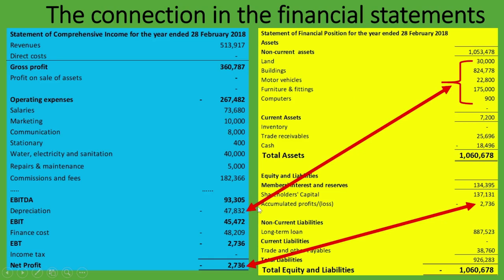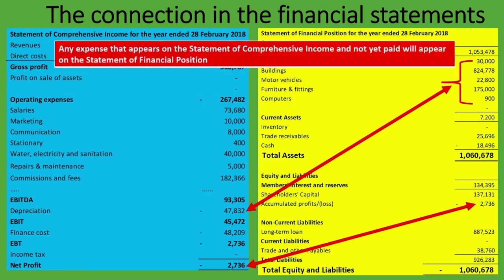Another connection between the income statement and balance sheet is depreciation. Depreciation in the statement of comprehensive income reduces non-current assets such as buildings, motor vehicles, furniture and fittings, and computers in the statement of financial position. The depreciation for the current period is added to accumulated depreciation from prior periods, reducing the carrying value of those non-current assets on the balance sheet.